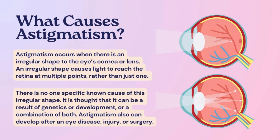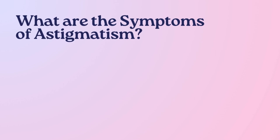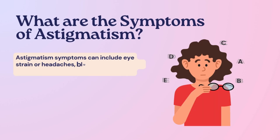There is no one specific known cause of this irregular shape. It is thought that it can be a result of genetics, development, or a combination of both. Astigmatism can also develop after an eye disease, injury, or surgery.